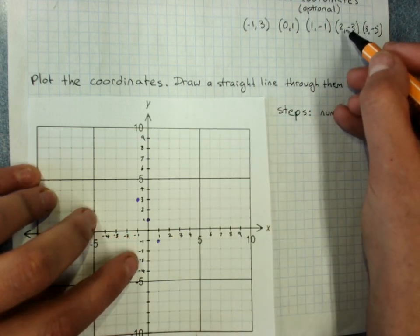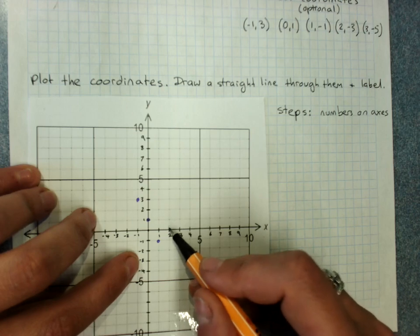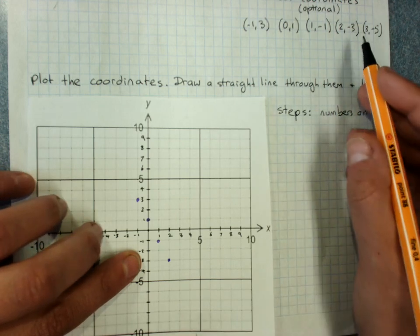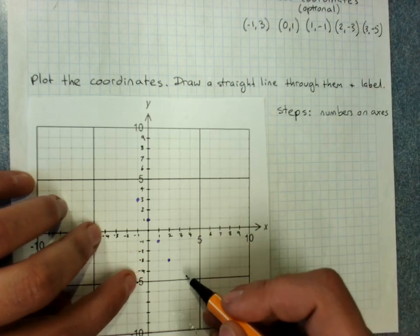2, negative 3. 2 on the x, negative 3 on the y. And 3, negative 5.